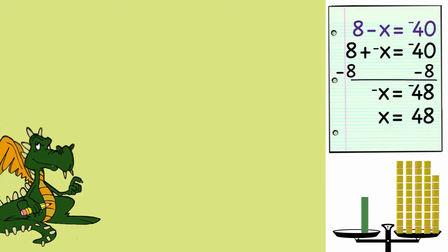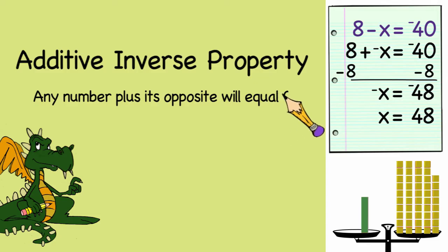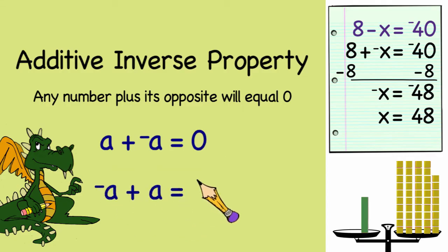To solve these problems, we're using the additive inverse property. That is, any number plus its opposite will equal zero. If we were to write this in general terms, we would say a plus negative a equals zero. Or we could have said negative a plus a equals zero. Remember, whenever we are solving an equation, our goal is to isolate the variable we're solving. When doing this, we need to keep the equation balanced by performing the same operation on both sides of the equation.